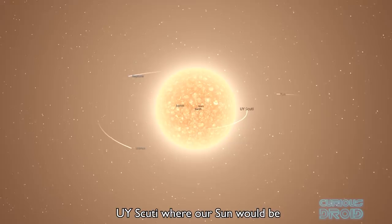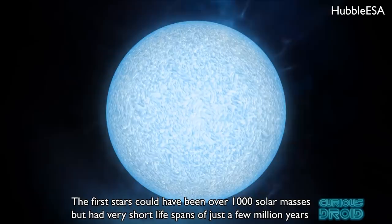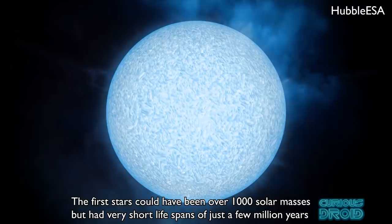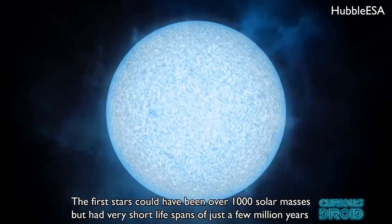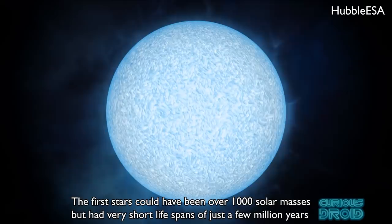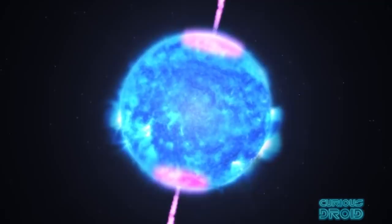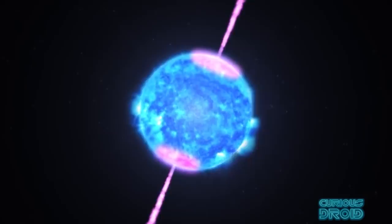If you placed it where our sun is in the solar system, its outer edge would engulf the orbit of Jupiter. But in the very early universe, there was far more hydrogen in much denser clouds from which the first stars formed. This allowed massive blue giant stars of up to a thousand solar masses or more to exist but they had very short lifespans of maybe just a million years or so before collapsing into supernovas and exploding out some of the heavier elements that went on to become the planets like the earth and eventually us.